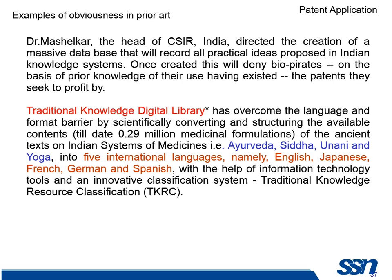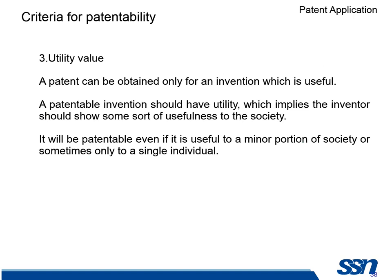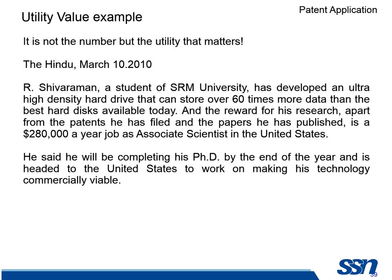The third one is utility value. A patent has to be workable and useful — that is called utility value. It is not the number but the utility that matters. For example, a student of SRM University developed an ultra-high-density hard drive that can store over 60 times more data. This is utility — bringing some improvement in what is happening today.